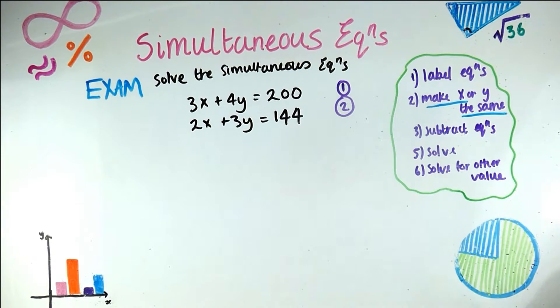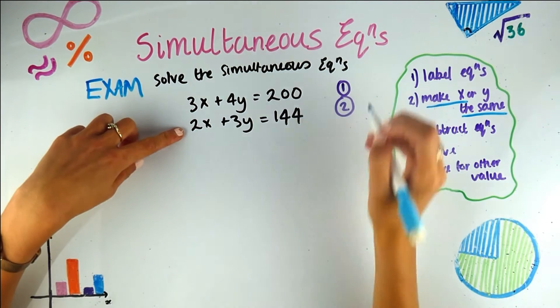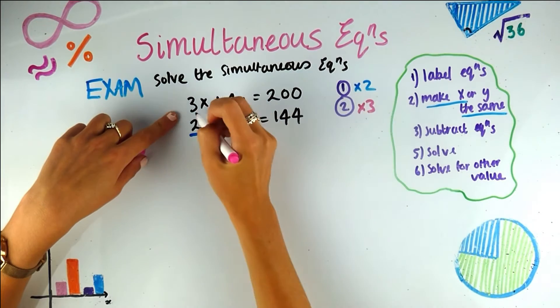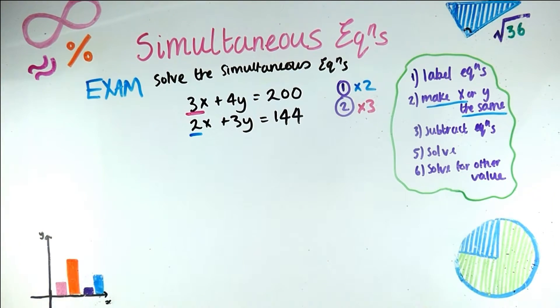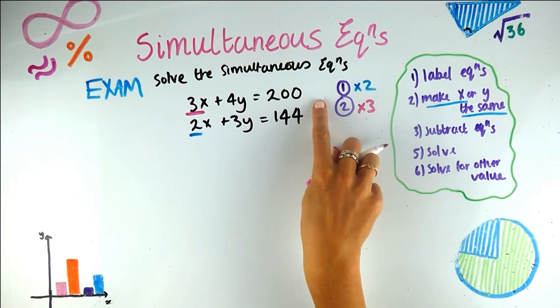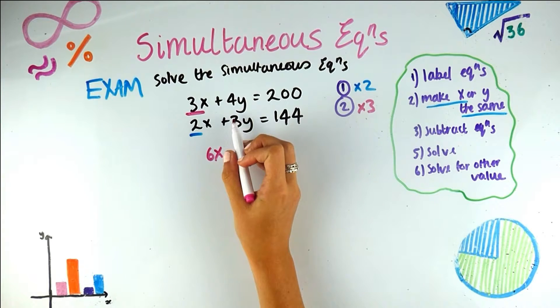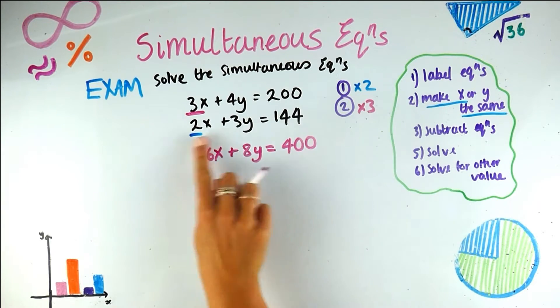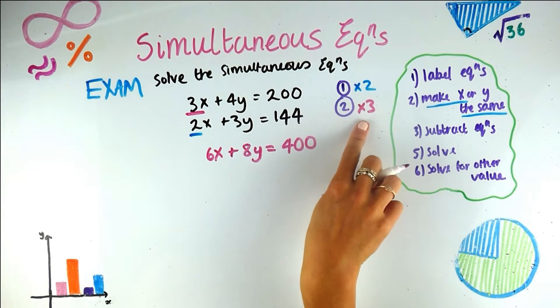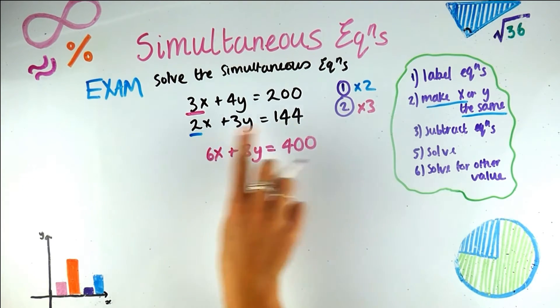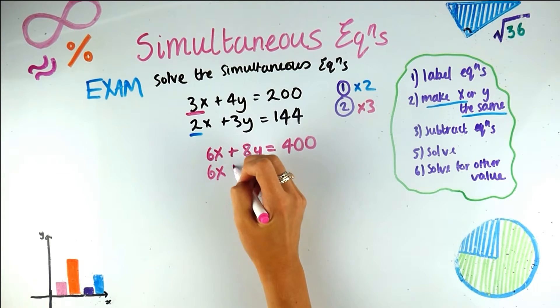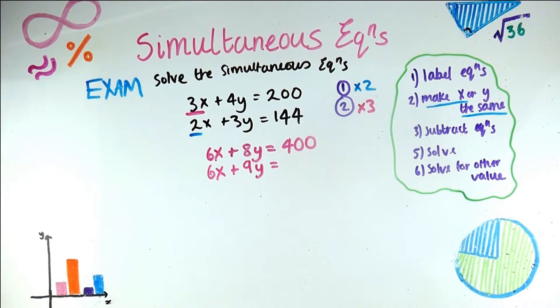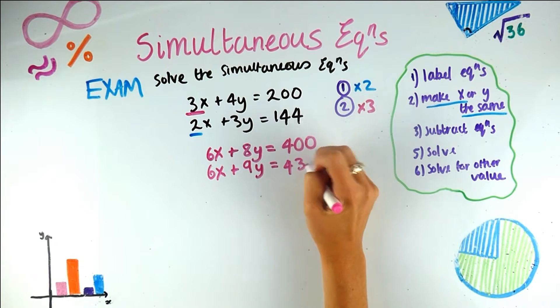Step 2, make x's the same. So there's nothing we can really do at the moment, because nothing is the same. So I'm going to multiply equation 1 by 2, and I get that from here. And I'm going to multiply equation 2 by 3, and I get that from here. So you do the opposite one. So I'm going to go ahead and do that. So this equation multiplied by 2. 3 times 2 is 6x. 4y times 2 is 8y. And 200 times 2 is 400. This one is now by 3, so just don't make silly mistakes. 2x multiplied by 3 is 6x. So there we go. Make x's the same.